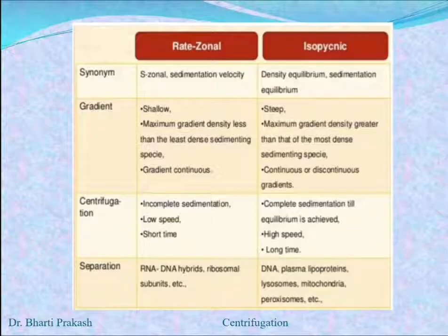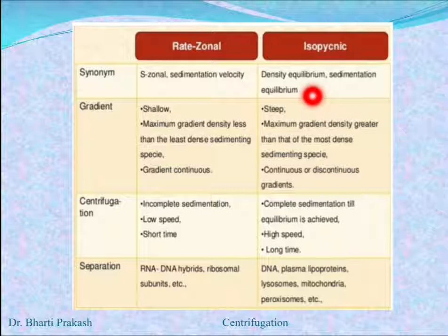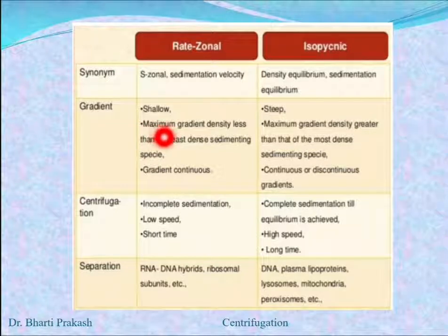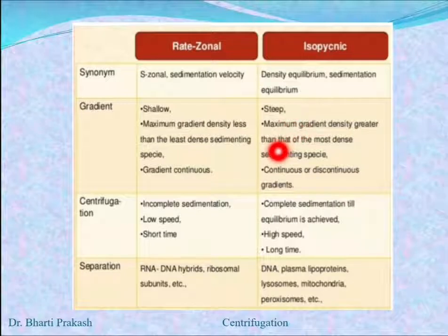Now, what are the differences between rate zonal and isopicnic sedimentation? Rate zonal is also known as sedimentation velocity centrifugation, whereas isopicnic means density equilibrium or sedimentation equilibrium separation. Regarding gradients: in rate zonal, the gradients are shallow and the maximum gradient density is less than that of the least dense sedimenting species, whereas in isopicnic, the gradient is steep and the maximum gradient density is greater than that of the most dense sedimenting species.